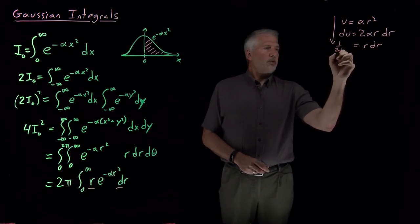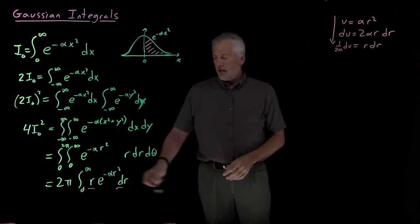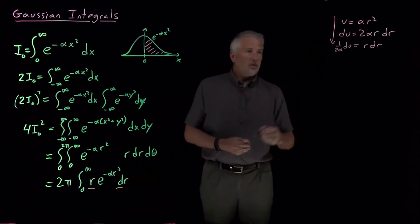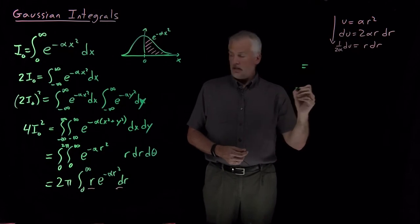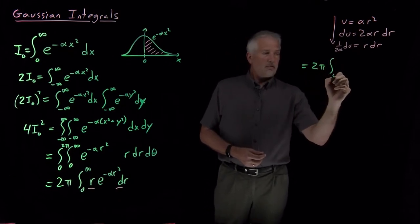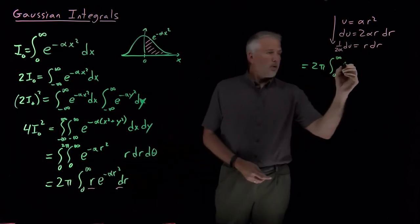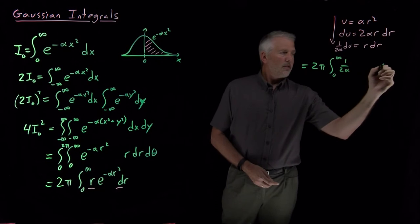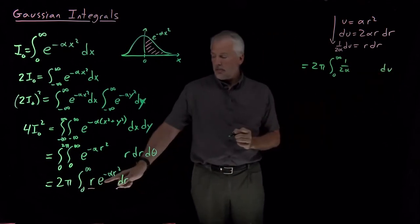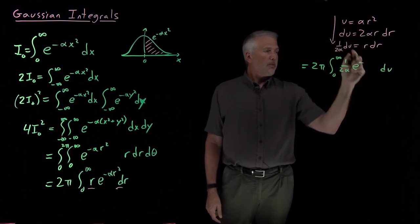If I use those definitions to rewrite this integral, my integral now looks like 2 pi integral from 0 to infinity, r dr looks like 1 over 2 alpha du, e to the minus alpha r squared looks like e to the minus u.